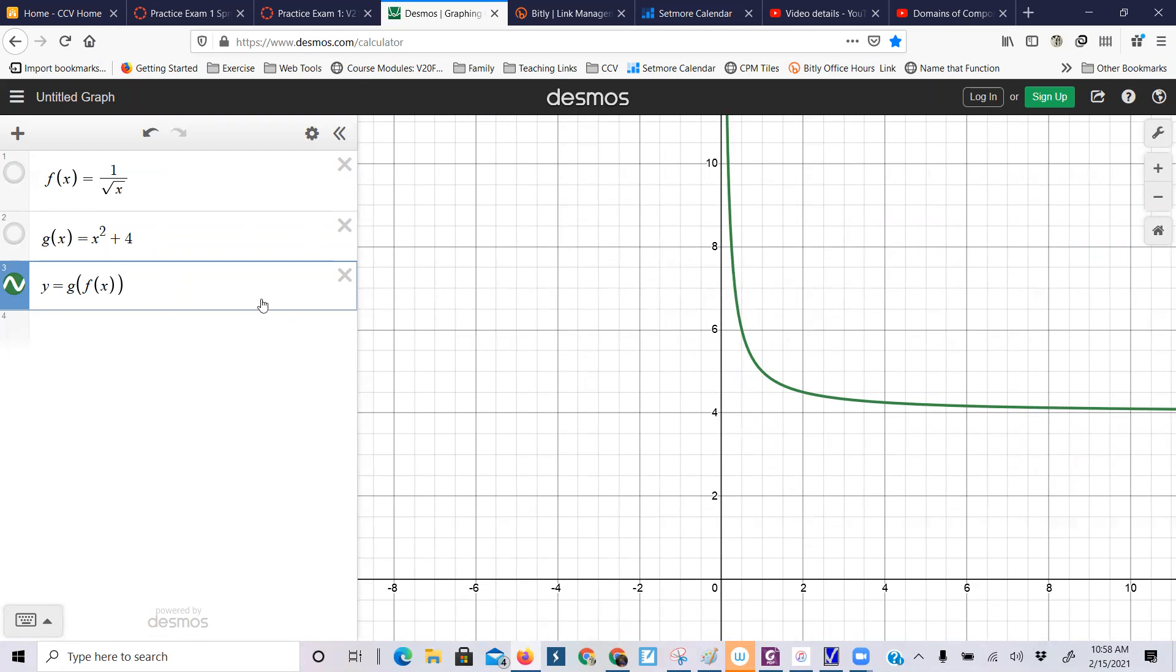Now, why does that happen algebraically? Well, I'm dropping in one over the square root of x, and then I'm squaring it, plus four, and when I square that, whoops, one over x, because one squared is one, and the square root of x squared is x, plus four, and in that case, you see how x can't be zero, so that domain limitation still exists.